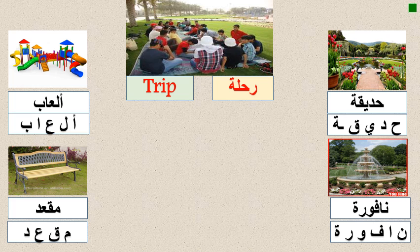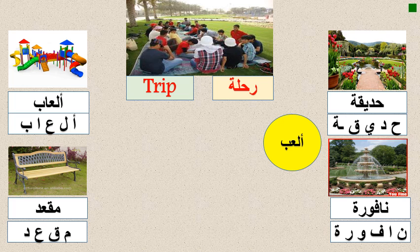We are talking about trip to the park, so we need some verbs to help us: ألعب (play), أشاهد (watch/see), آكل (eat), أشرب (drink). For example: أنا ألعب في الحديقة - I play in the park. Or أنا ألعب في الألعاب - I play in the play area.